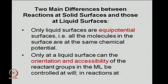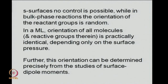The two main differences between reactions at solid surfaces and those at liquid surfaces: it is only at the liquid surfaces that we have equipotential conditions, which means all molecules in the surface are at the same chemical potential. Only at the liquid surface can orientation and accessibility of the reactant groups be controlled. At solid surfaces such control is not possible, and in bulk phase reactions the orientation of reactant groups is completely random. This is an important distinction between liquid surfaces, solid surfaces, and bulk phase conditions.